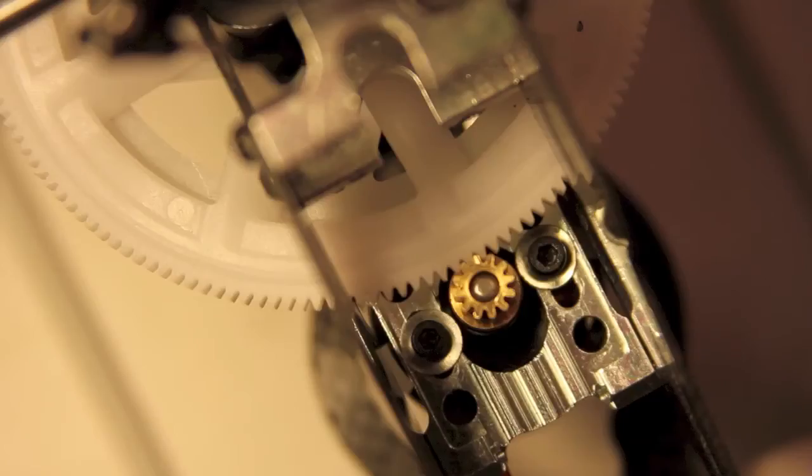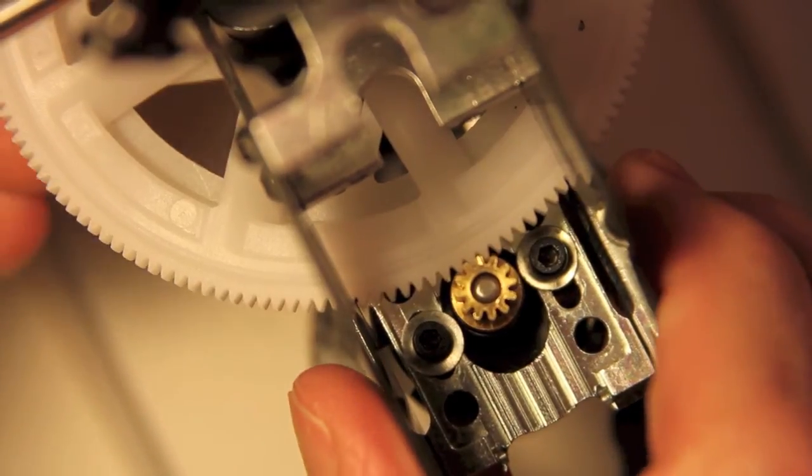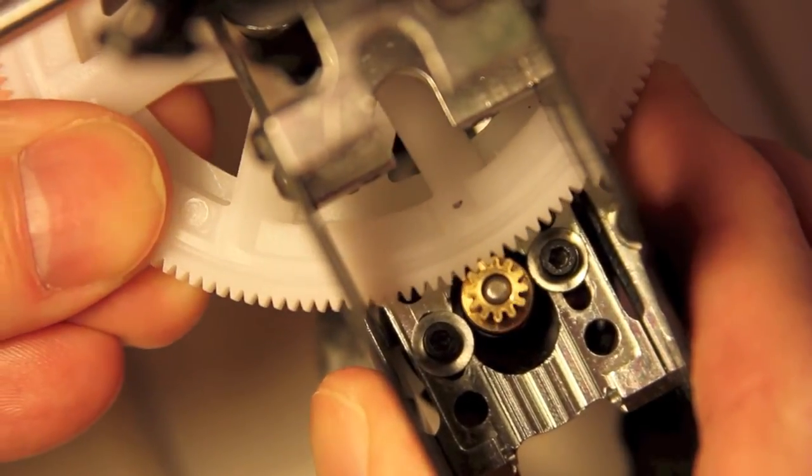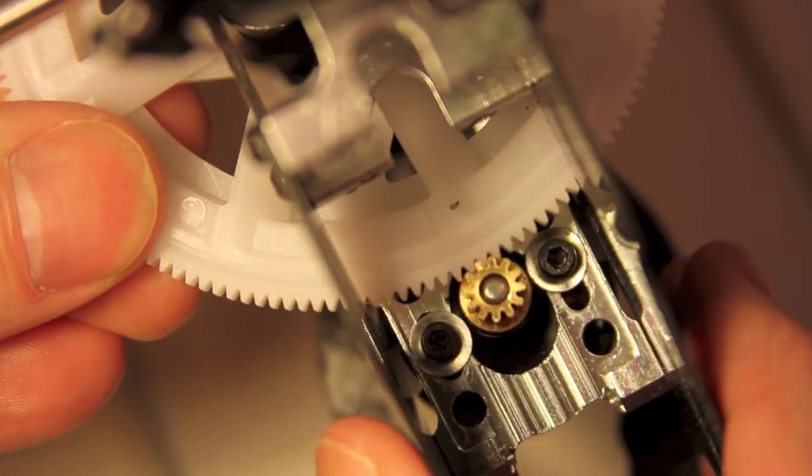So there's kind of this balancing point that has to happen between the main gear and the pinion to get it aligned just right. Alright, so I think I have this set where I want it. And basically, what I have is a black sharpie mark on one of the arms of this main gear.